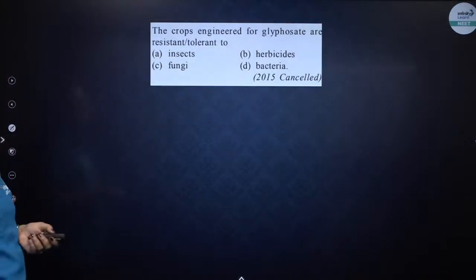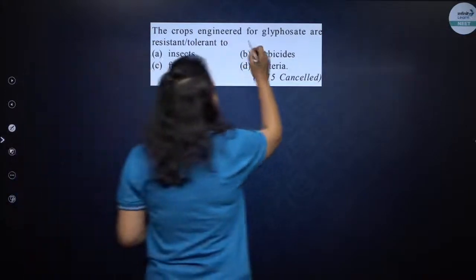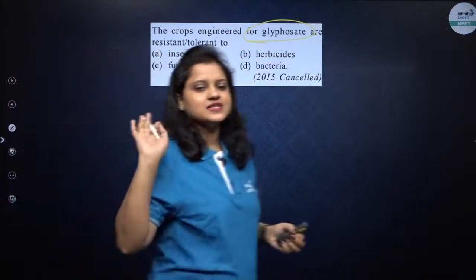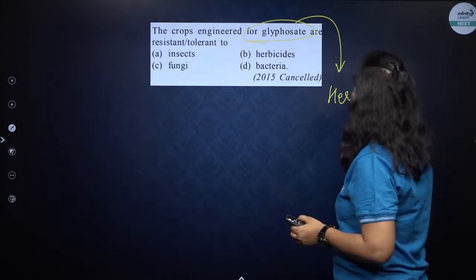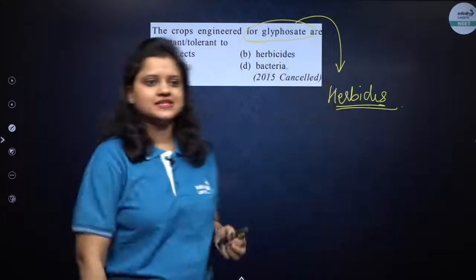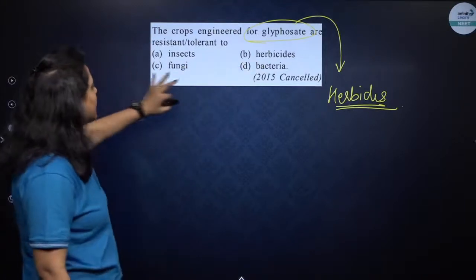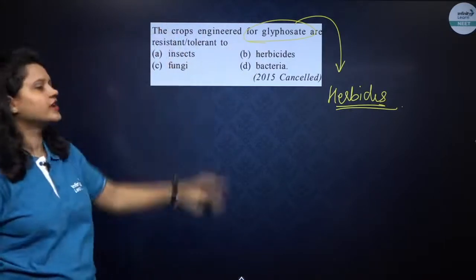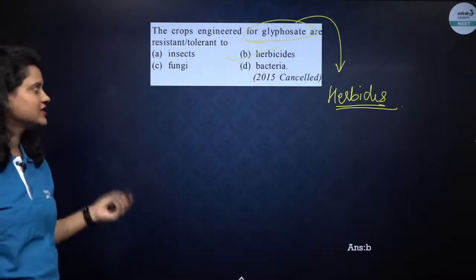Next: the crops engineered for glyphosate — glyphosate is an organophosphate herbicide. The correct option is that these crops are resistant or tolerant to herbicides. This question was asked in NEET 2015.